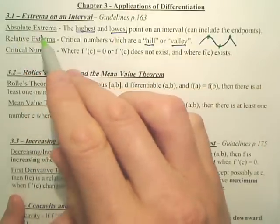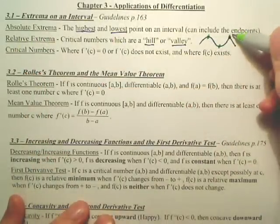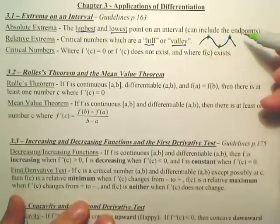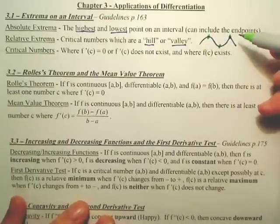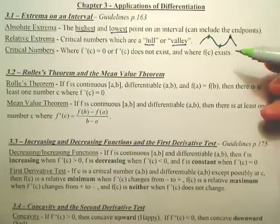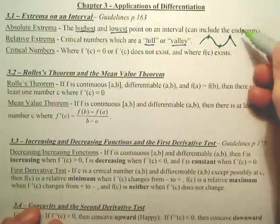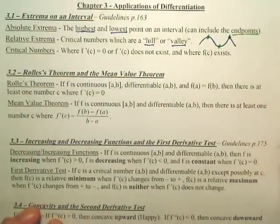Now, absolute extrema, you look for relative extrema as well as endpoints. The highest or lowest, counting the endpoints, are your maxes and min, absolute maxes and min. Again, the key is you include the endpoints for absolutes.